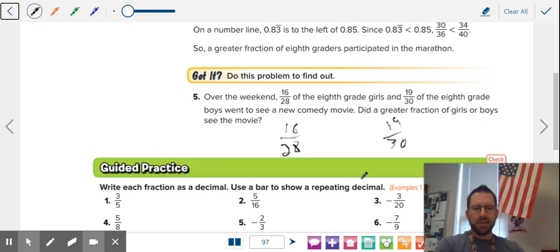All right, so the times 10 didn't work. So what we're gonna do is use what's called quick common denominators, which is where you take the denominators and multiply them by the other fraction. So we're gonna take this whole fraction times 30 and this whole fraction times 28.